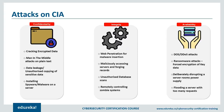Last but not least is availability, best ensured by rigorously maintaining all hardware, performing repairs immediately when needed, and maintaining a correctly functional operating system free of software conflicts. It's also important to keep current with system upgrades and prevent bottlenecks. Redundancy, failover, and high-availability clusters can mitigate serious consequences when hardware issues occur. A comprehensive disaster recovery plan is essential. Safeguards against data loss must include unpredictable events like natural disasters; backup copies must be stored in a geographically isolated, fireproof, water-safe location. Firewalls and proxy servers can guard against denial-of-service attacks and network intrusions.